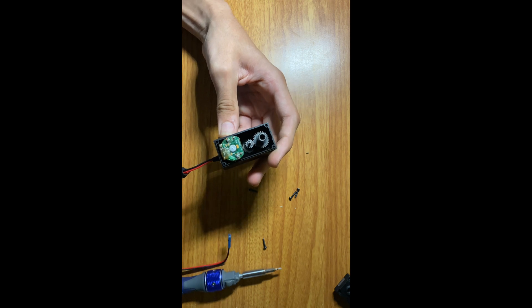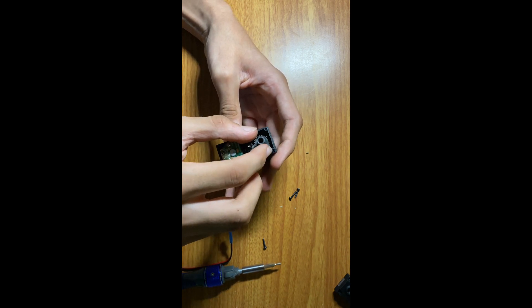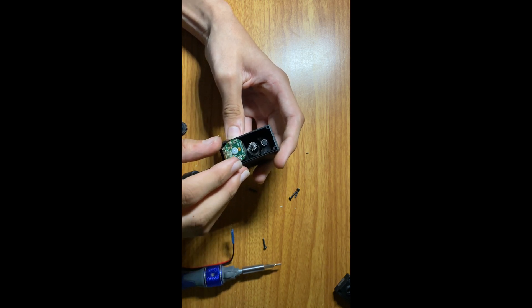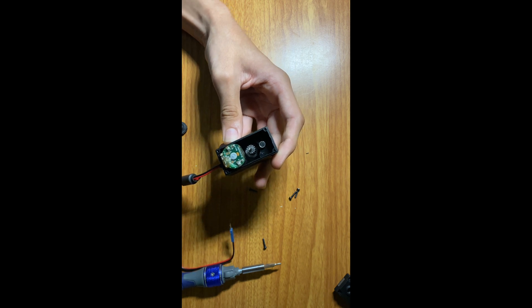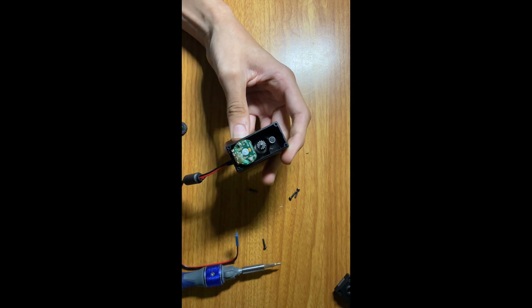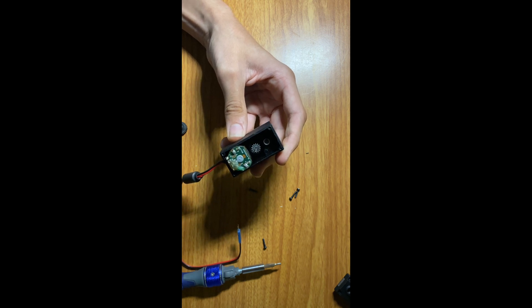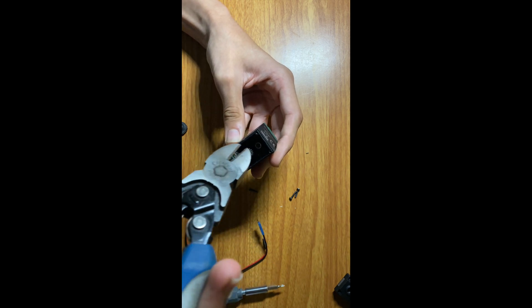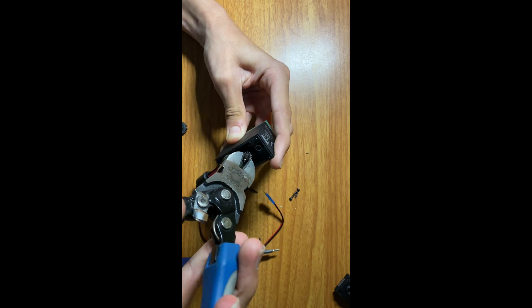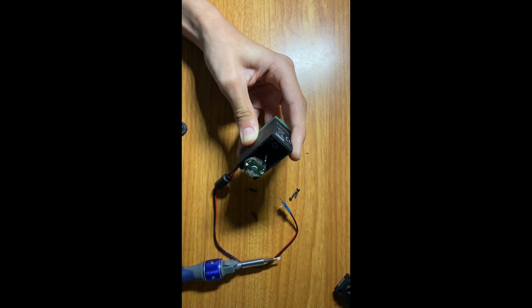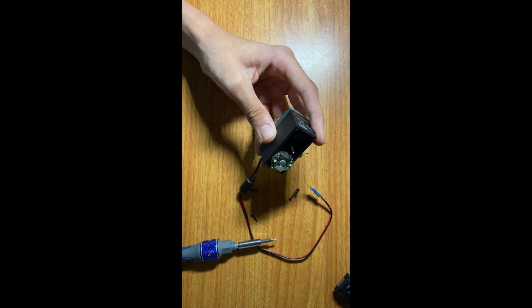You can see that they've already come out loose, so we're going to take these out. For the middle one, I recommend using a pair of pliers because it's a bit tough to get to.